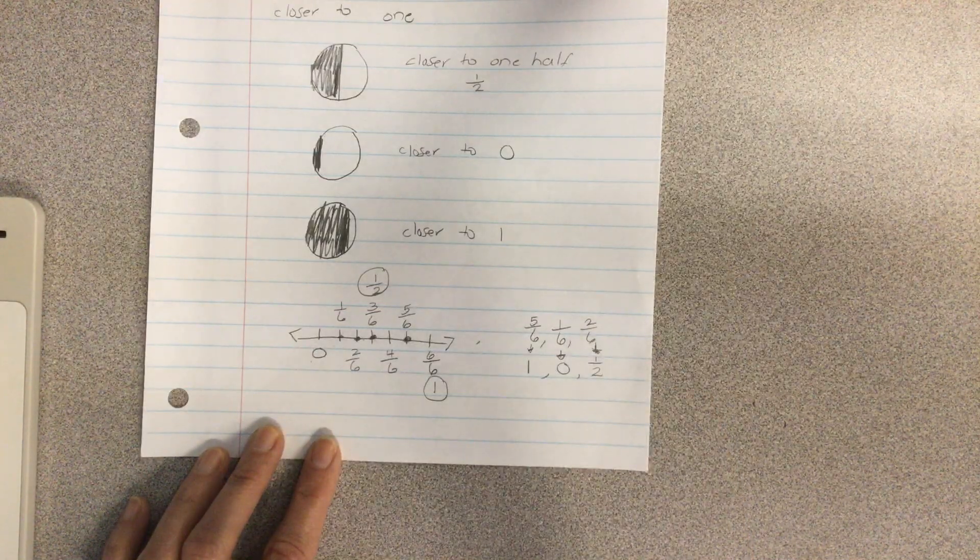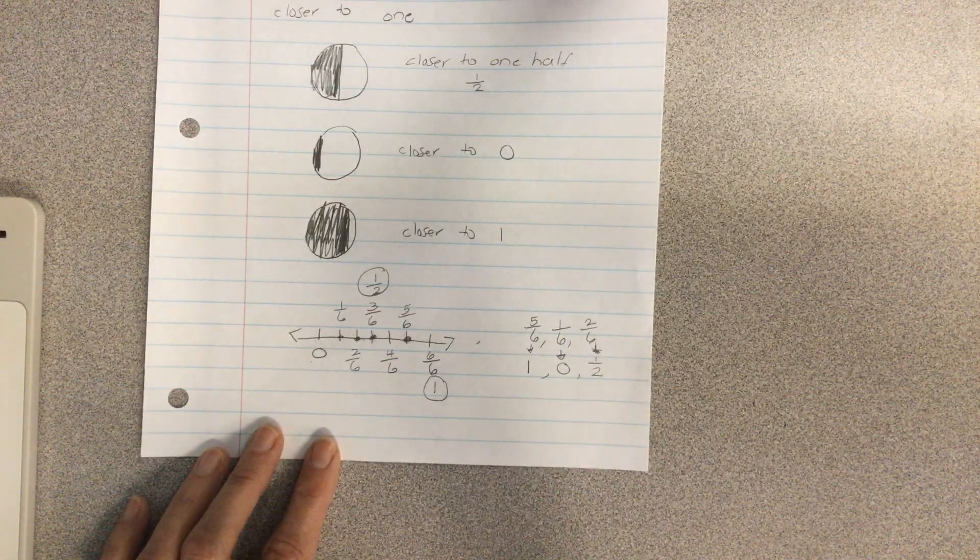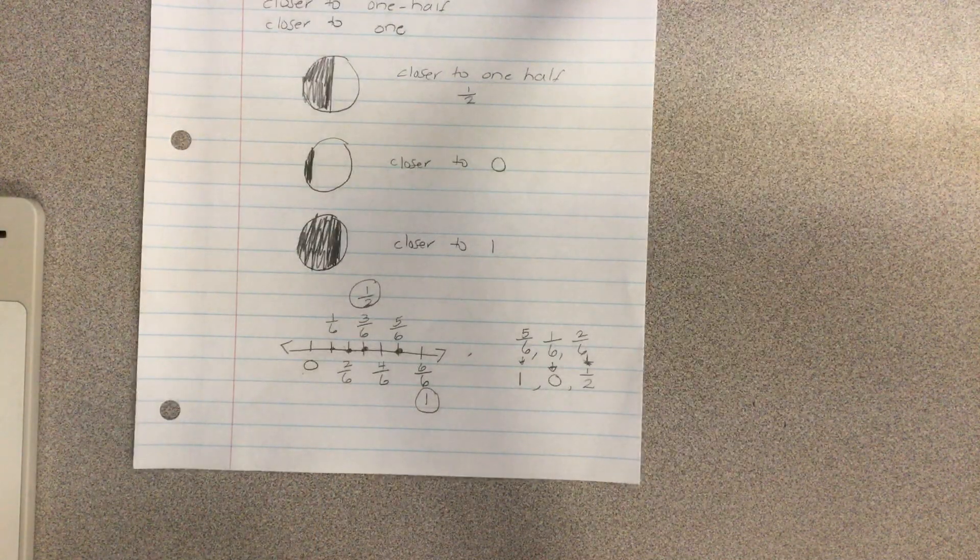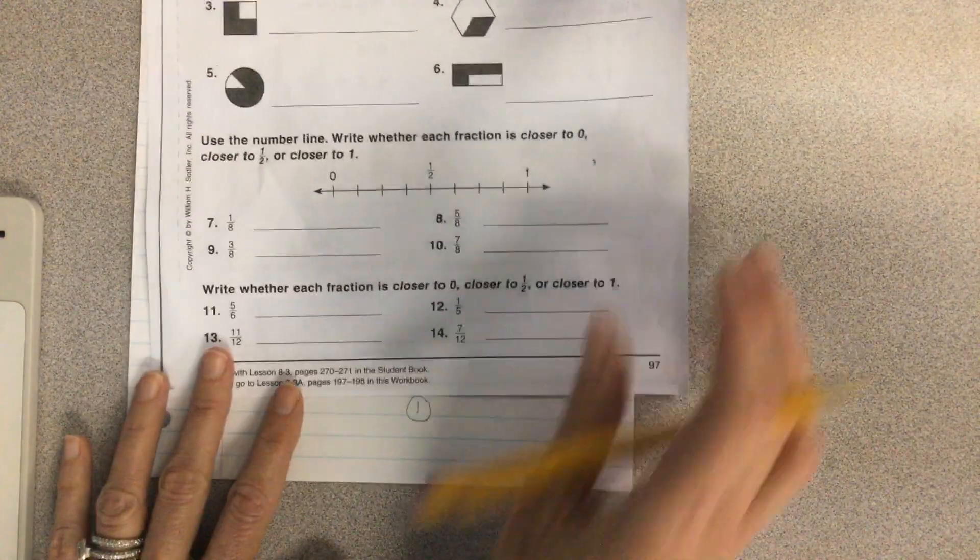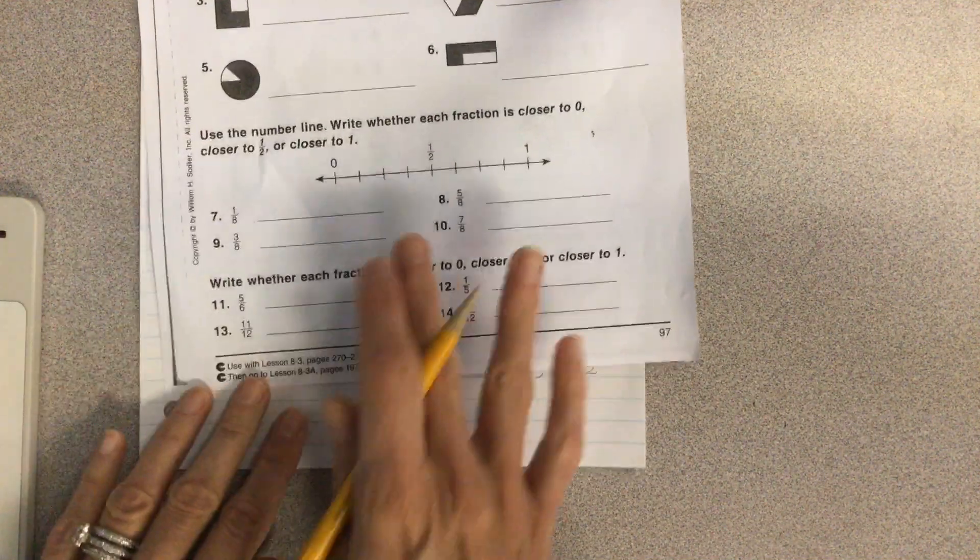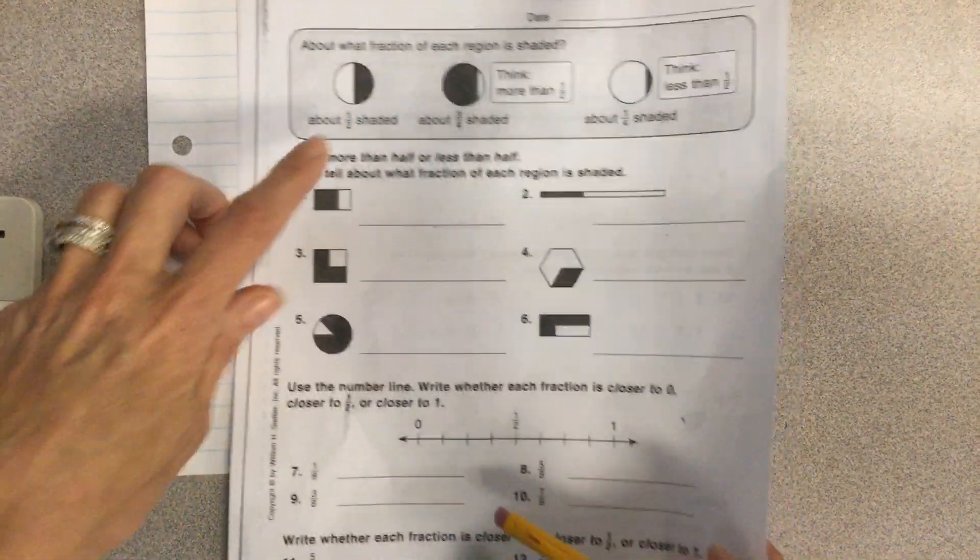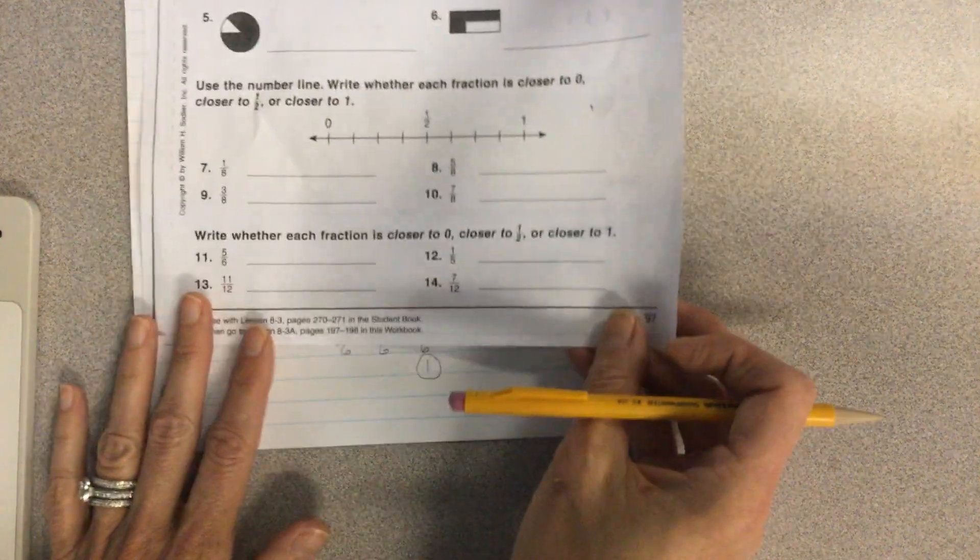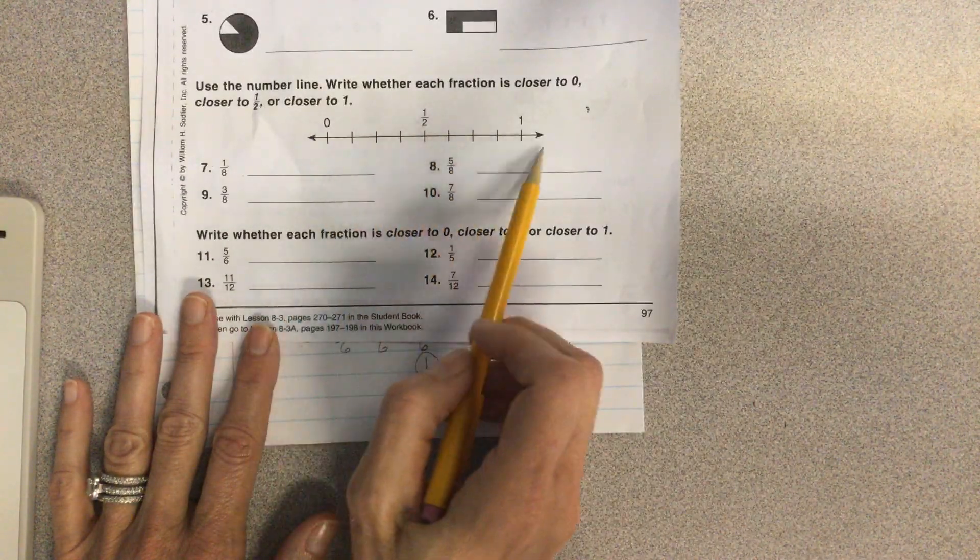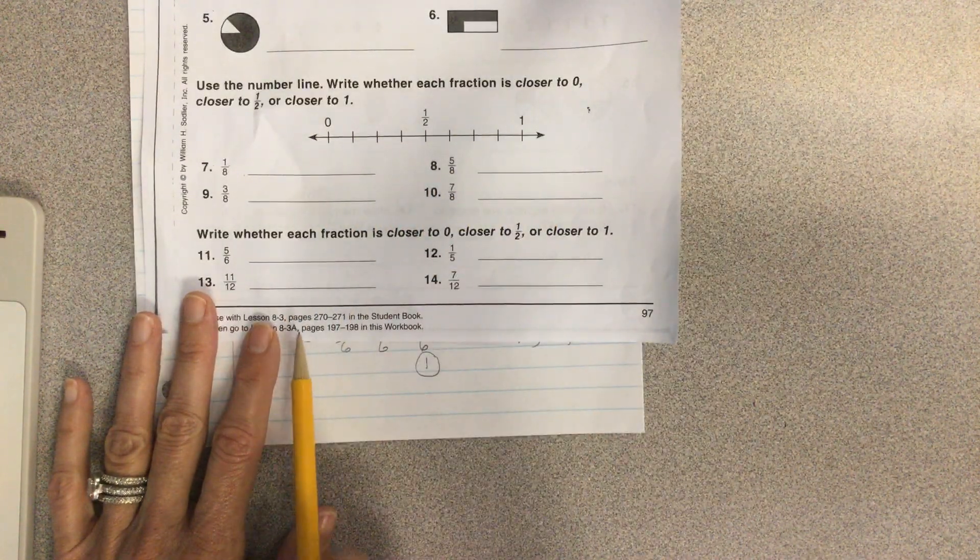So you're going to have some problems that look like that as well. And then on the very bottom section of your worksheet, page 97. And I'm going to put that in front of you so you can see it. It's this worksheet right here, page 97. And it says estimating fractions at the top. And it kind of gives you a little bit of what we did at the beginning. Then a number line question.